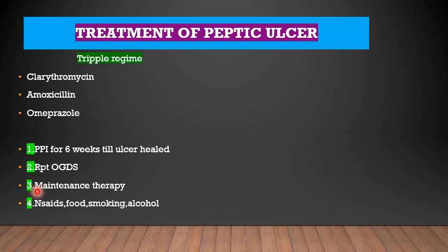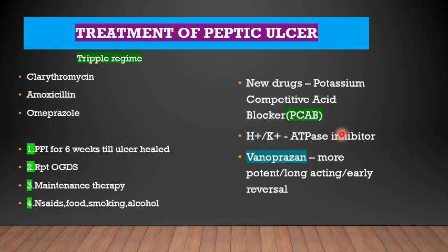Other important measures include avoiding NSAIDs, toxic or noxious food, smoking and alcohol. Of late, another group of drugs has entered the market after PPIs — the potassium competitive acid blocker (PCAB), also an inhibitor of the hydrogen potassium ATPase. It is called vonoprazan, which is reported to be more potent, long acting, with early reversal of side effects, though this is yet to be confirmed with more trials.